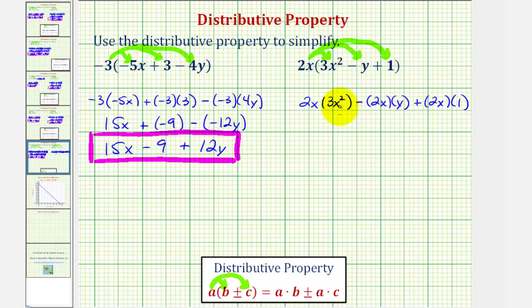So two x times three x squared would be six x to the third. Remember, this is x to the first, so we have three factors of x, so six x cubed or six x to the third. Minus two x times y, that would be two xy. And then we have plus two x times one, which would just be two x.